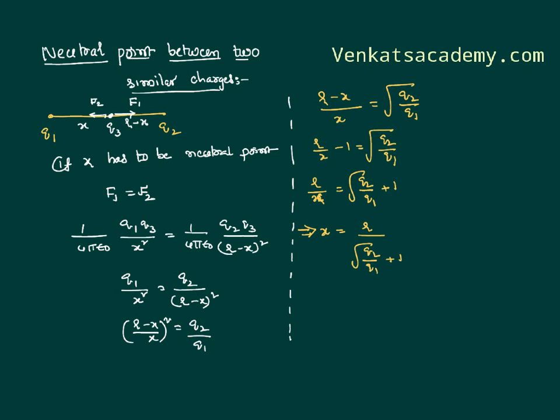Using this formula, we can simply find out the location of a neutral point. Say for a simple example, if there is a problem where Q1 is 1 coulomb, Q2 is 4 coulomb, and distance of separation between them is 10 centimeters. Where is the location of a neutral point?